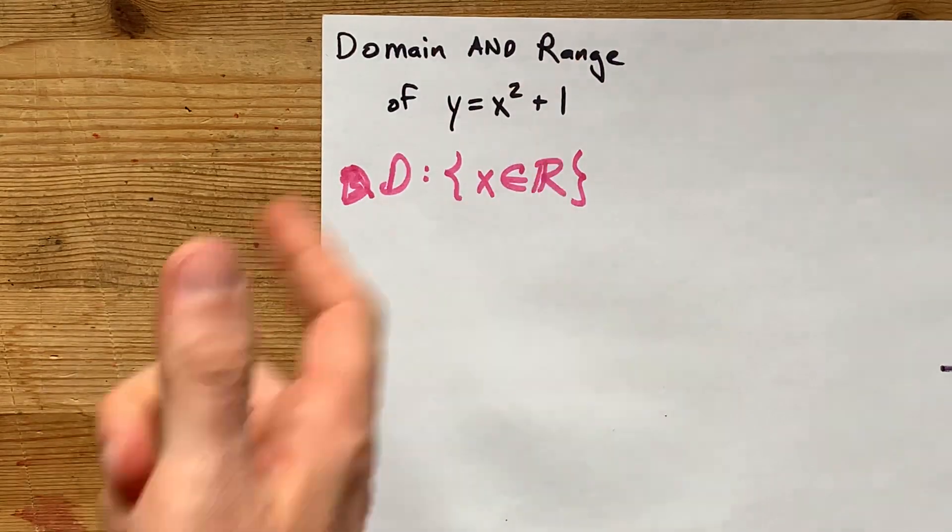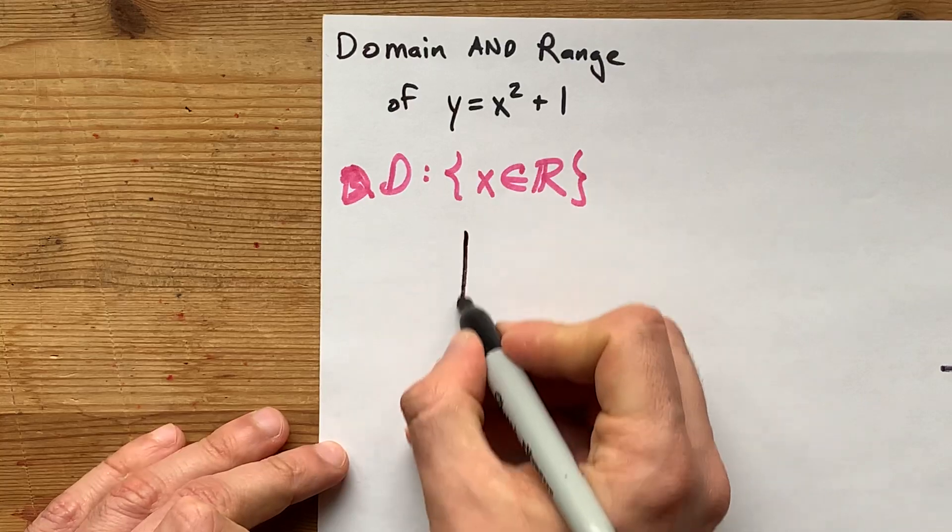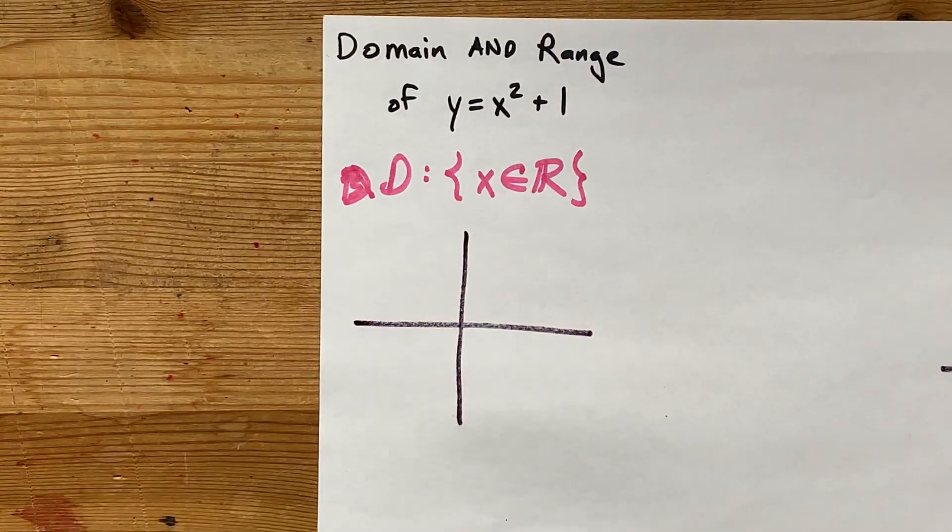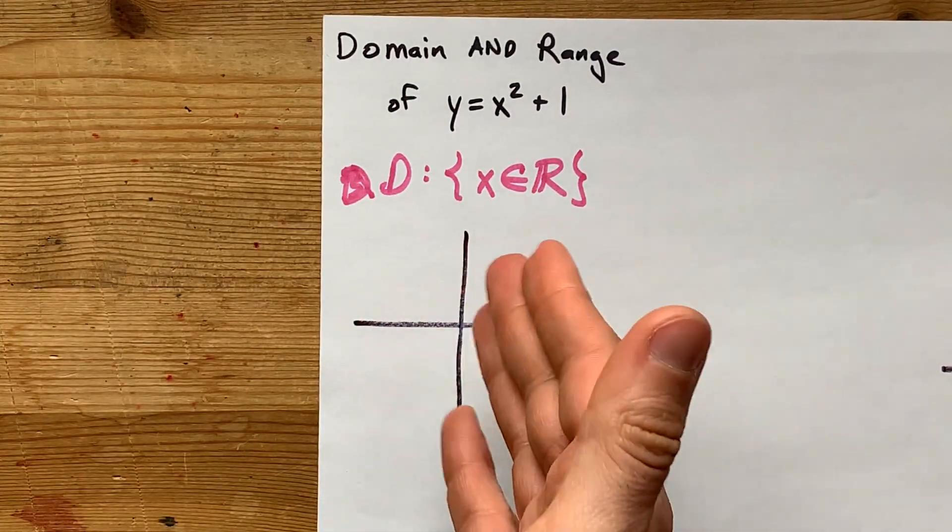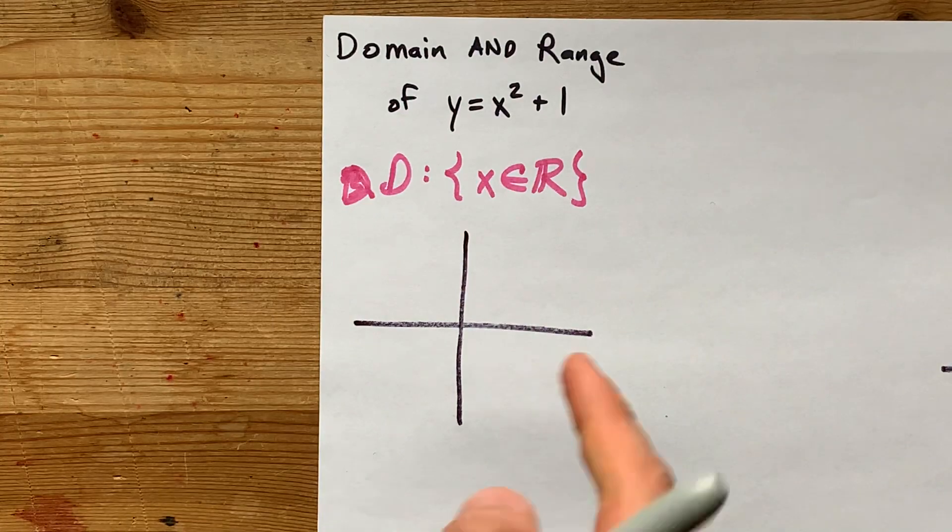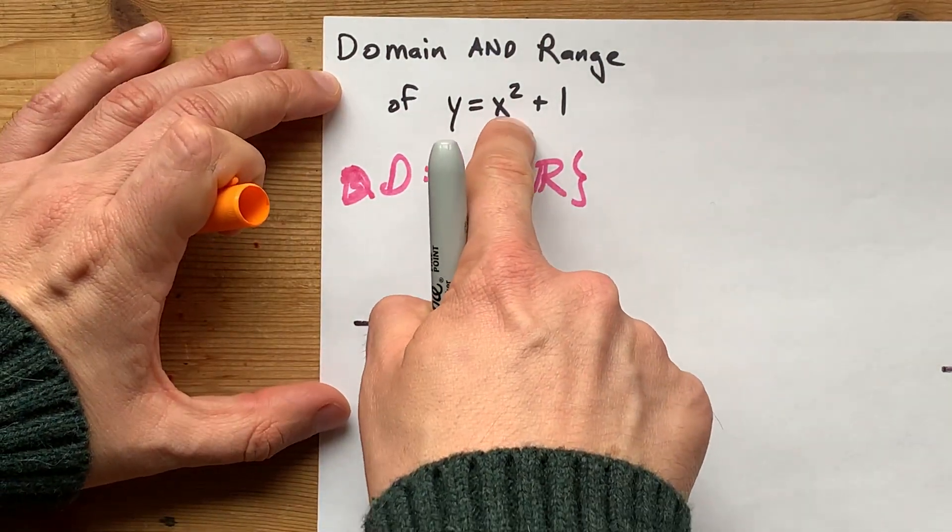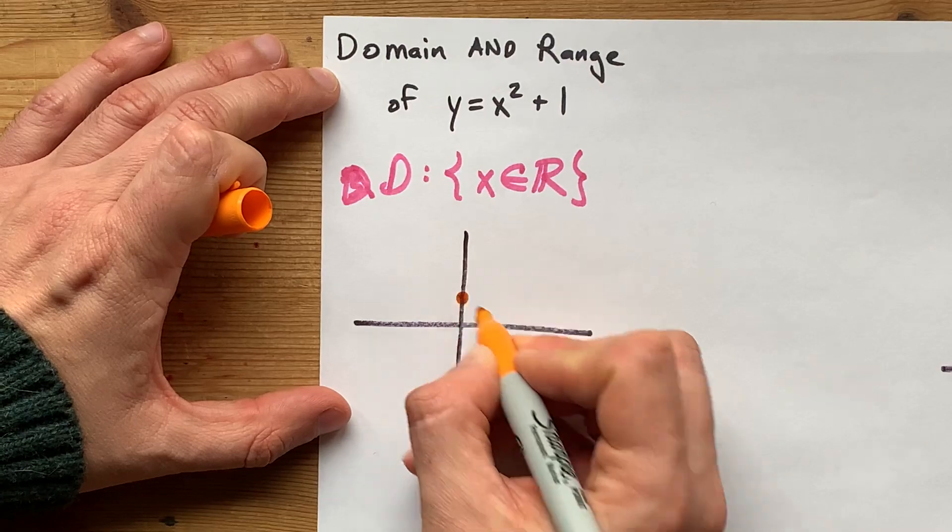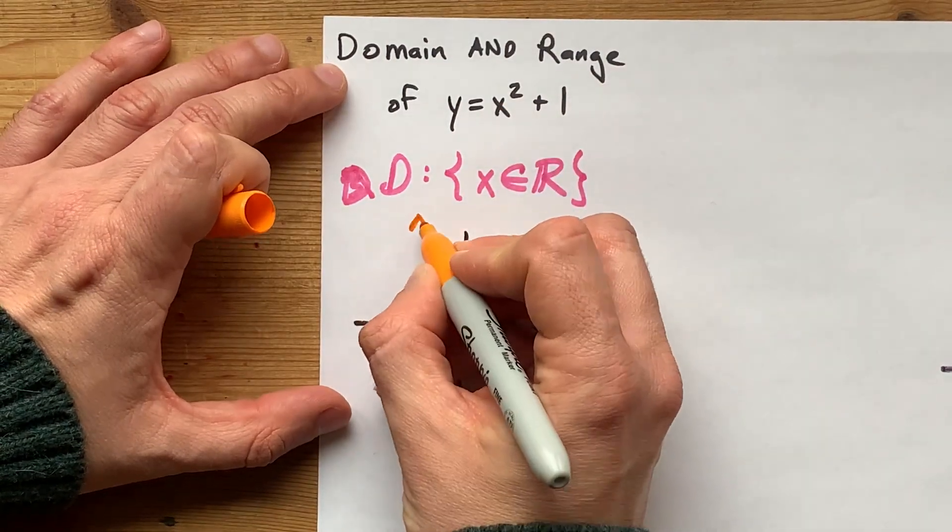Now, the range is tougher to do without knowing what the graph is. It's because you have to know how high and low the graph goes to do range. This is a parabola with its vertex at 0, 1, and it opens up.